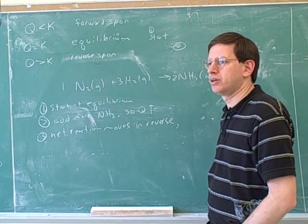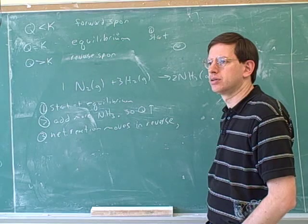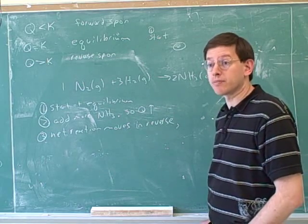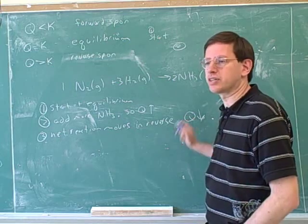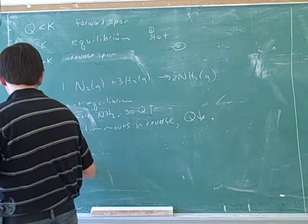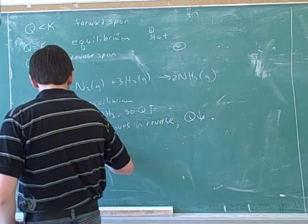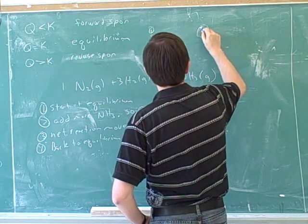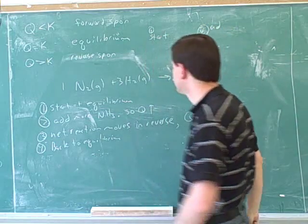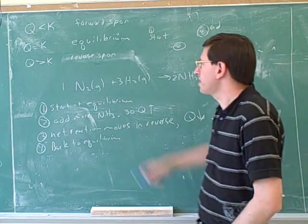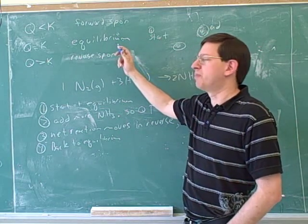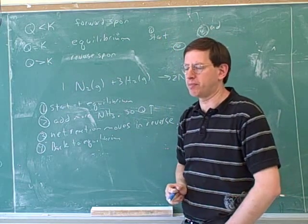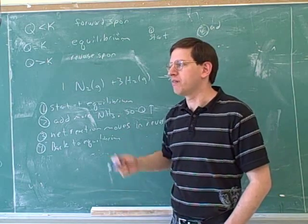And as that happens, what's going to be happening to Q? It's going to be approaching K. By increasing or decreasing? By decreasing. By decreasing. Yeah, that's right. Because when we're moving in reverse, Q is decreasing. Until eventually, as you said, we'll be back to equilibrium. This is why this is called equilibrium. You don't always have to be in equilibrium. But if you are disturbed from equilibrium, the natural tendency is to move back to equilibrium. That's kind of the definition of equilibrium. It's the place that you always try to get back to if conditions are disturbed.